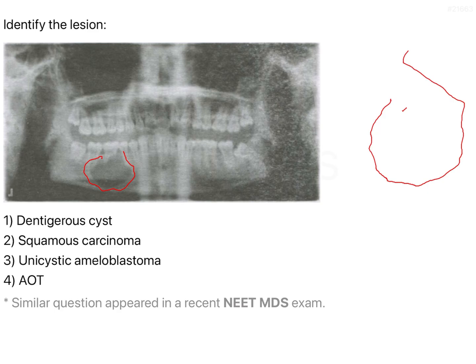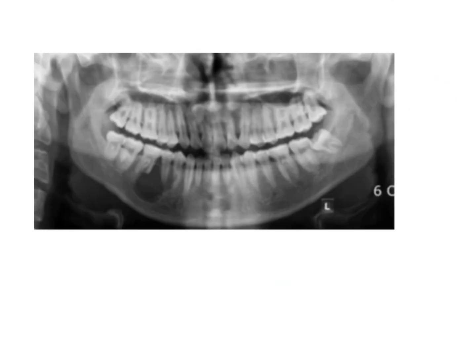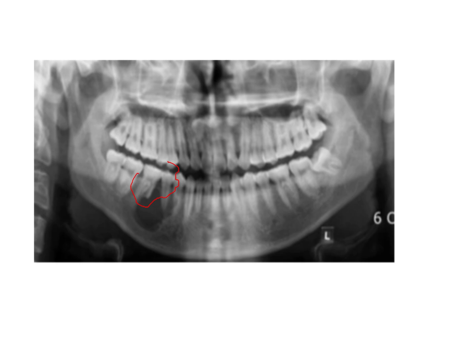When you have a multilocular lesion, how will it appear on the radiograph? You will have radio opaque lamina dura or very faint radio opacity present within the radiolucency. In this image, if you look very distinctly, there is a radiolucency and within that radiolucency there is no haziness or radio opacity present. That means this lesion is basically a unilocular lesion.